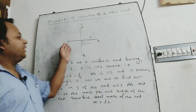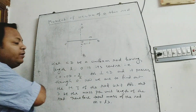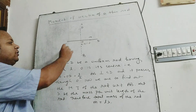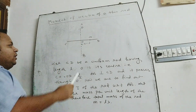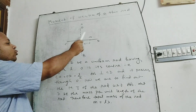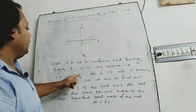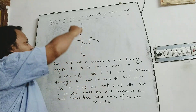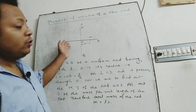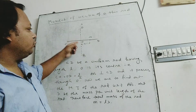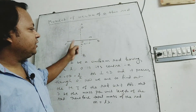Let CD be a uniform rod having length L. O is the center, that is CO is equal to OD, which is equal to L by 2. AB is an axis which is normal to CD and passing through the center of the rod, O.